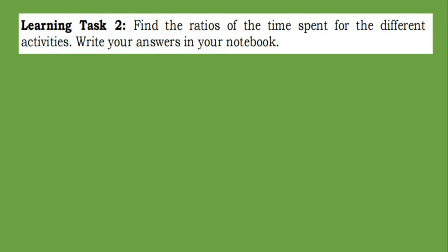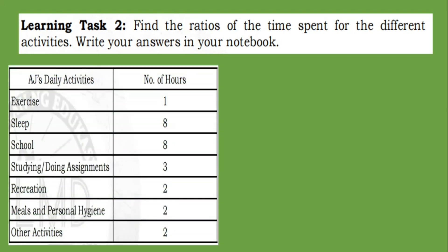For our learning task two, find the ratios of the time spent for the different activities. Write your answers in your notebook. So this is AJ's daily activities and the number of hours he spent in a day.